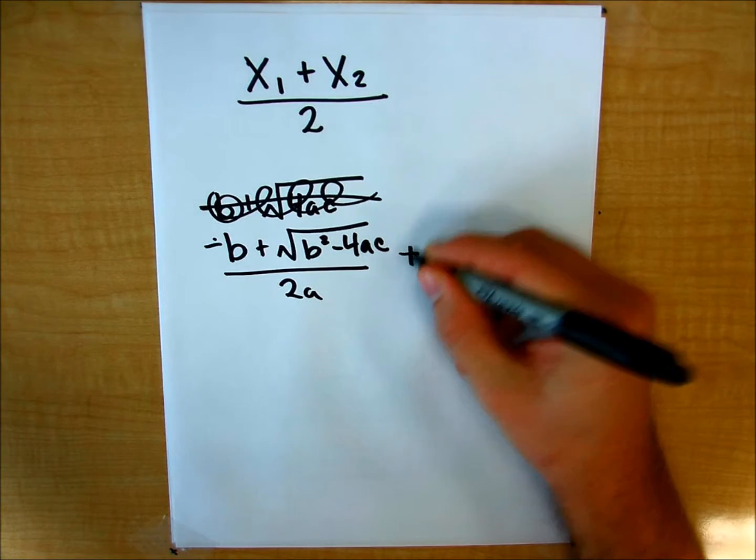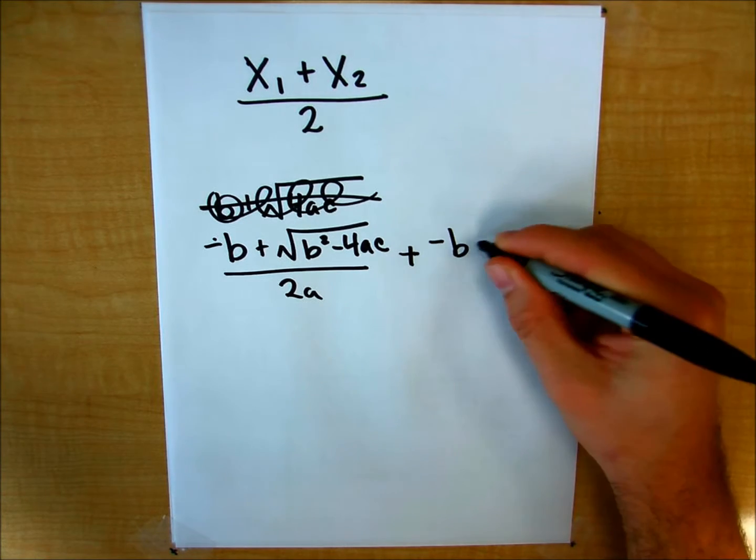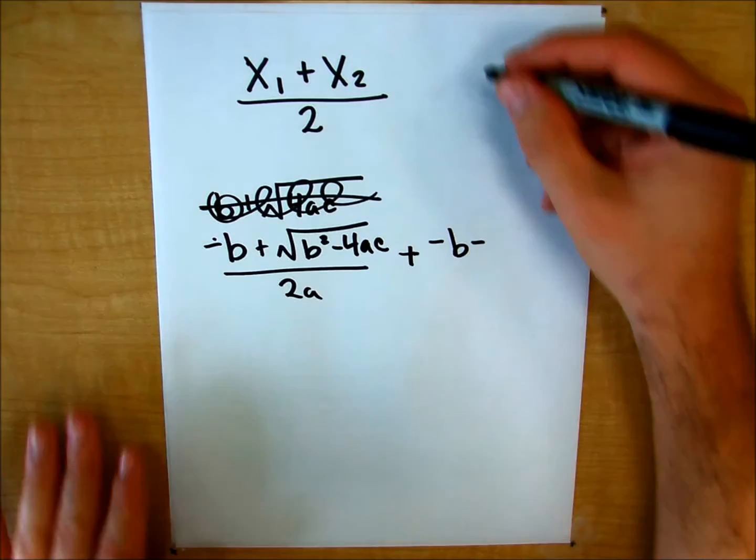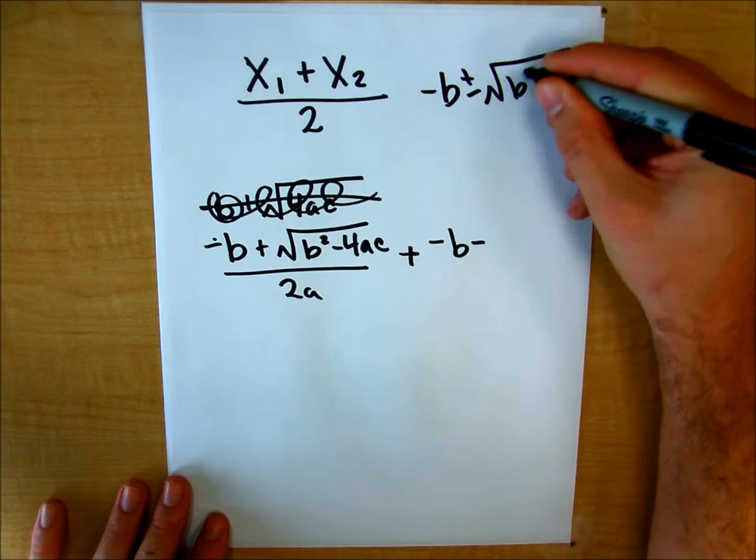Plus, negative b minus. So my usual quadratic formula is negative b plus or minus the square root of b squared minus 4ac.